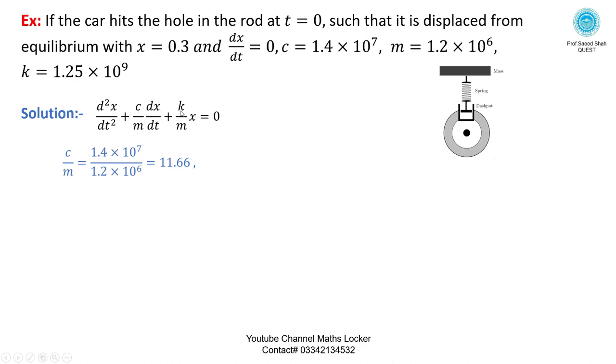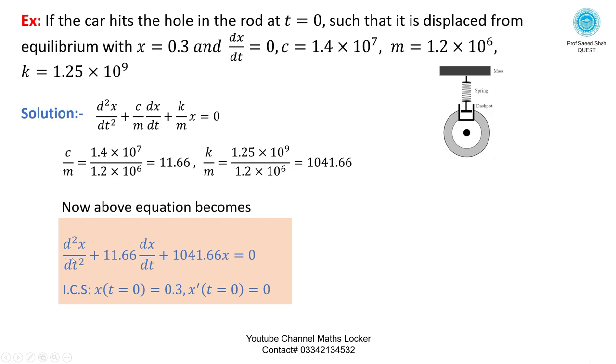We will calculate the value of C/m and K/m. C/m substituting the value gives 11.66. Similarly K/m can be calculated as 1041.66. So we can write the equation: d²x/dt² plus 11.66 times dx/dt plus 1041.66X equals zero.